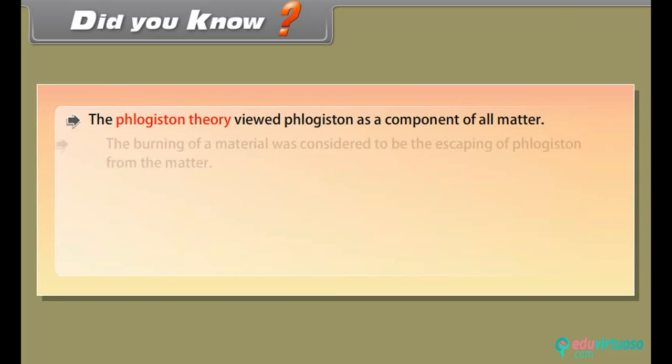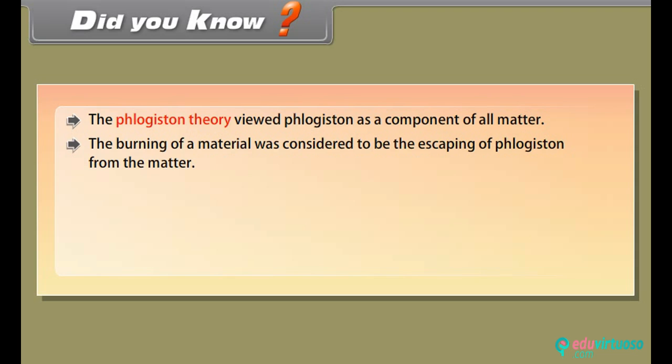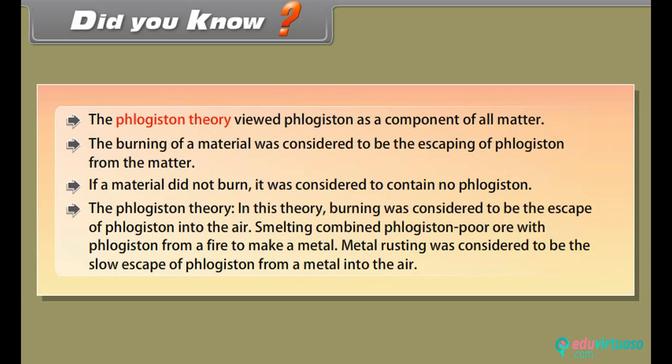The phlogiston theory viewed phlogiston as a component of all matter. The burning of a material was considered to be the escaping of phlogiston from the matter. If a material did not burn, it was considered to contain no phlogiston. In this theory, burning was considered to be the escape of phlogiston into the air. Smelting combined phlogiston poor ore with phlogiston from a fire to make a metal. Metal rusting was considered to be the slow escape of phlogiston from a metal into the air.